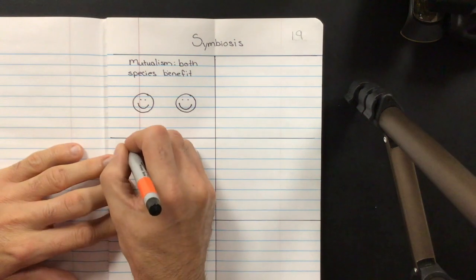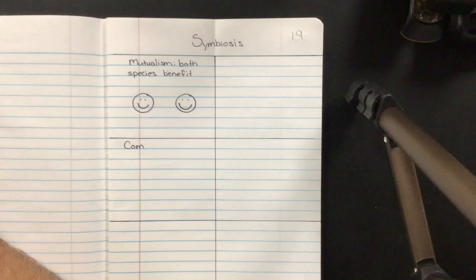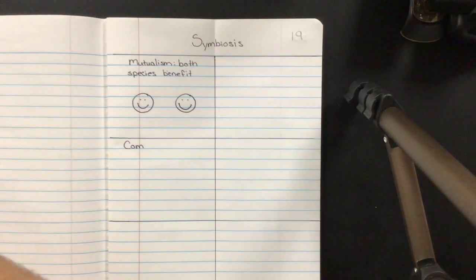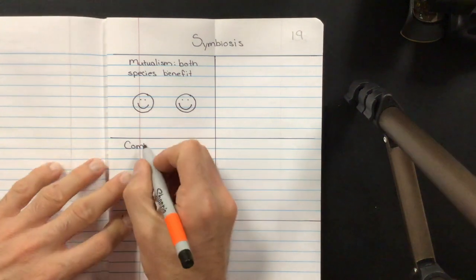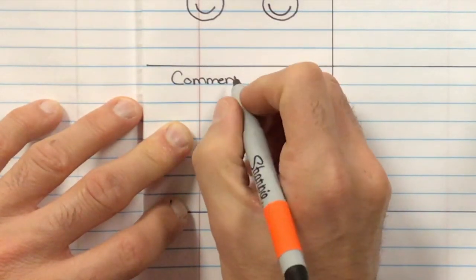Now another type is called commensalism. And in true fashion, let me double check my spelling of that guy. I want to make sure I thought there were two M's, but it's always good to check. Commensalism.